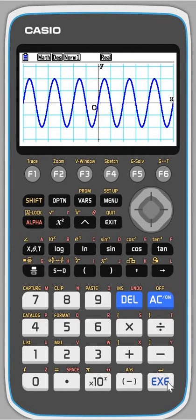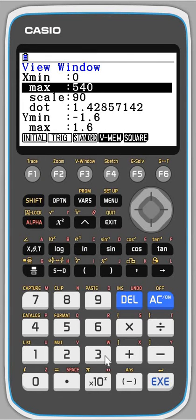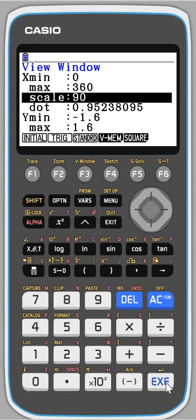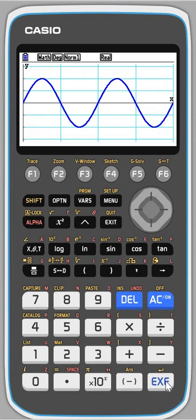Suppose I just want to focus on the values between 0 and 360. So I could go view window and change my x to go from 0 up to 360. Okay, and it's marking off the 90 degrees, which makes sense. If you're in radians, it'll give you it in radians.